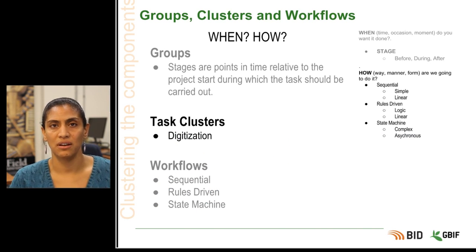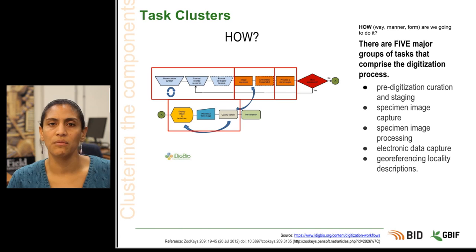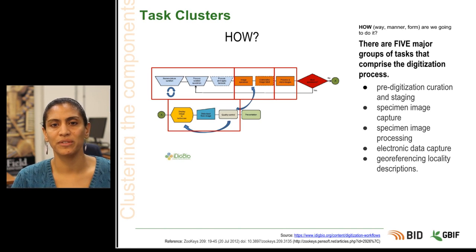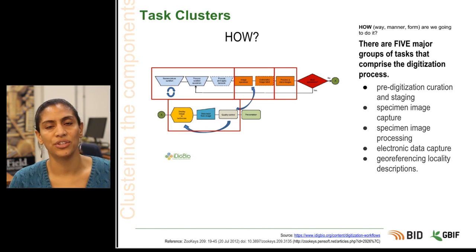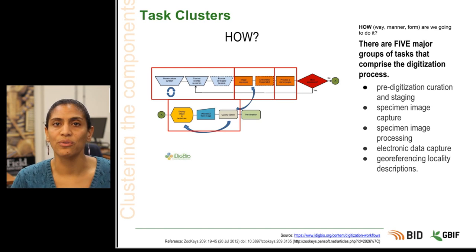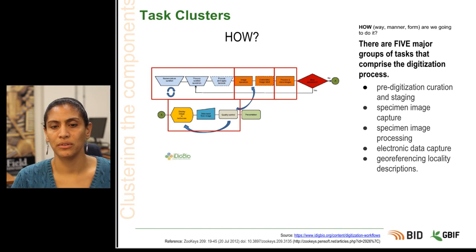There are many ways to arrange tasks, and this is the how of your project. We'll look at two methodologies here. The first are task clusters — a term coined by the iDigBio team in their 2012 paper, "Five Task Clusters That Enable Effective and Efficient Digitisation of Biological Collections." The authors identify five major groups of tasks most often found in successful natural history digitisation projects: pre-digitisation curation and staging, specimen image capture, image processing, data capture, and geo-referencing. Clustering is an extremely useful way to organise project detail into manageable chunks.